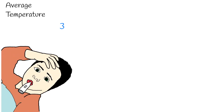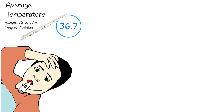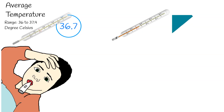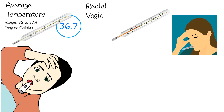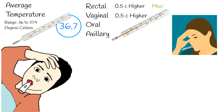Human average temperature is 36.7 degrees Celsius. Normal range is from 36 to 37.4 degrees Celsius. It means for some people normal temperature is lower, such as 36, and for some it is much higher. Rectal or vaginal temperature is slightly higher by 0.5 compared to axillary temperature.